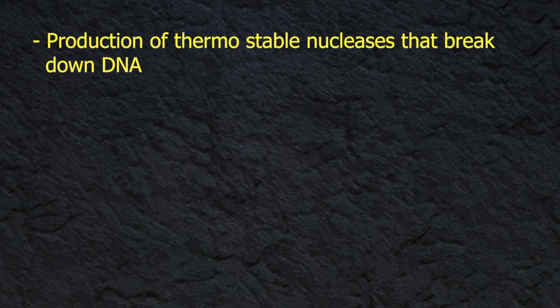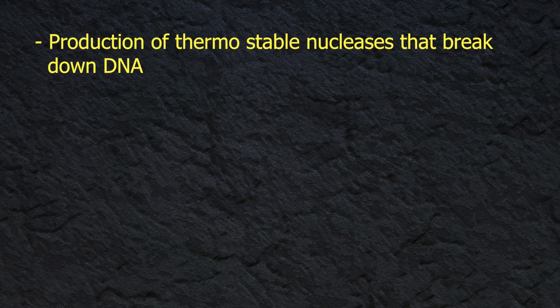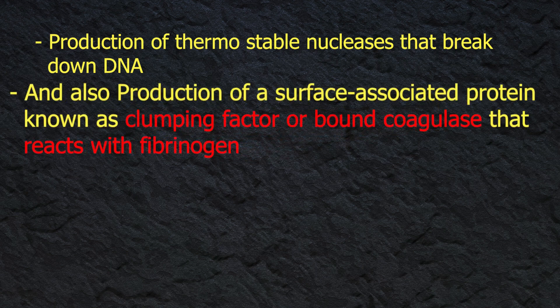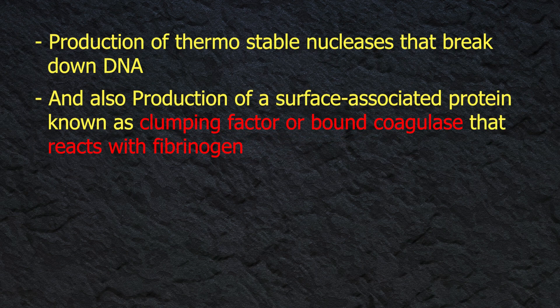The main distinctive diagnostic features of S. aureus are: production of the extracellular enzyme coagulase, which converts plasma fibrinogen to fibrin (aided by an activator present in plasma); production of thermostable nucleases that break down DNA; and production of a surface-associated protein known as clumping factor or bound coagulase, which reacts with fibrinogen.